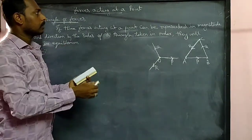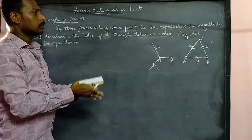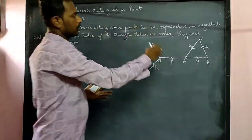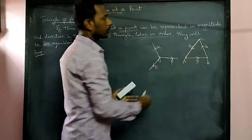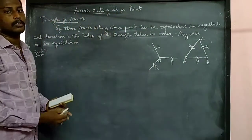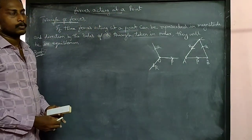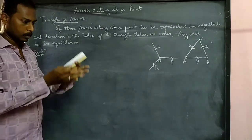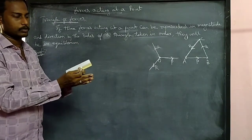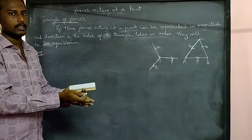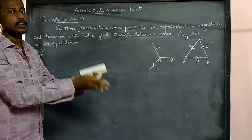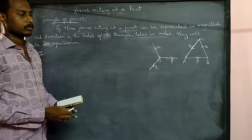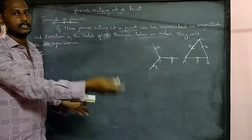One point is that three forces act at a point. If the forces are in order — one triangle has three sides — those forces are in equilibrium. When an object is in equilibrium, the forces act at a point. The total of the forces is zero.